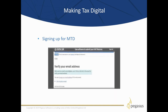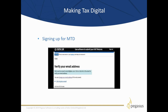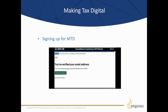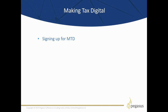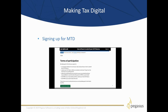They will send you an email — click on the link in that email to verify your correct email address. They will then confirm that this has been verified, at which point you can select the 'continue to sign up' option. Finally they will send you the terms and conditions that you need to accept. HMRC will send you a confirmation email within 72 hours of signing up. Do not submit a VAT return until you receive that confirmation email. Remember you should only sign up once you've submitted your final VAT return using the existing system and prior to the end of the VAT quarter where you'll be submitting your next return under the new MTD rules.